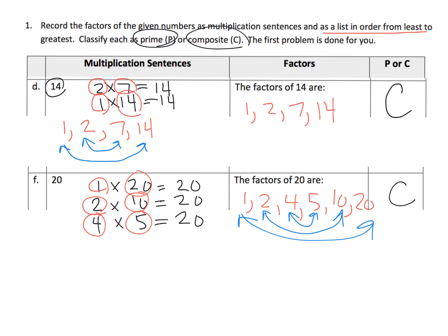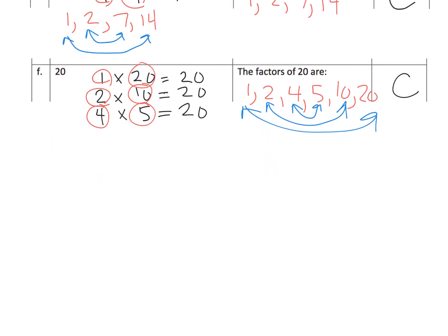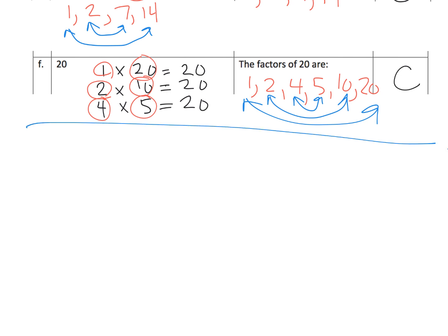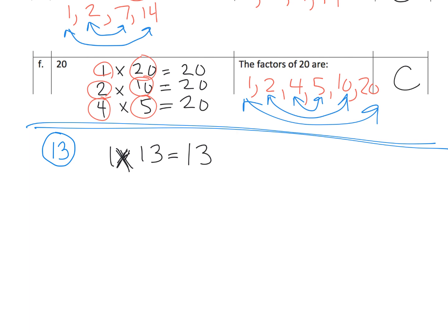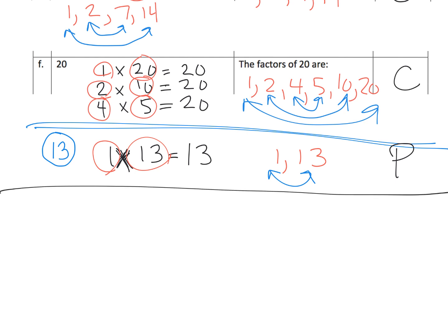Let's talk about prime numbers. Take thirteen: the only way to make thirteen with whole numbers is one times thirteen equals thirteen. That's the only thing that works. Listing the factors from least to greatest: one and thirteen. They have partners and we're done. This makes thirteen prime, because the only two factors that exist are one and itself.